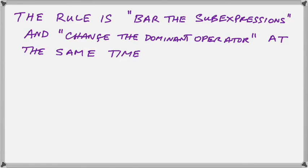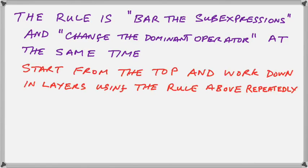The rule is to bar the sub-expressions and change the dominant operator at the same time when removing the big bar. And then you subsequently perform this same rule as you remove smaller bars under the big bar. Start from the top of the expression and work down in layers using the rule above repeatedly when you remove each bar.